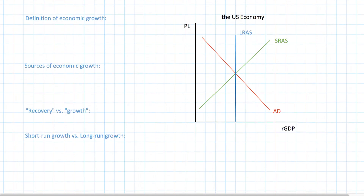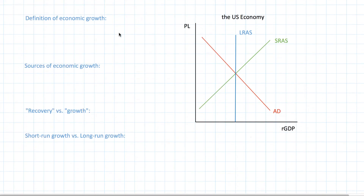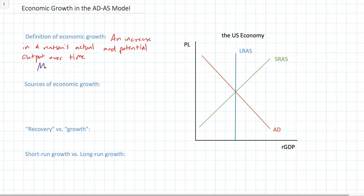Let's start with the definition of economic growth. This is a term you've certainly heard of, but you may not know technically how to define it. Economic growth can be defined as an increase in the actual and the potential output of a nation over time. Output is measured using gross domestic product, or GDP. Therefore, we can actually measure economic growth.